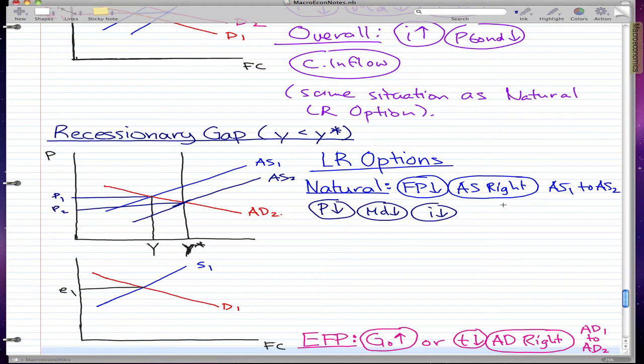So i falls, and when i falls we know that the price of bonds go up. Price of bonds go up means that we want the foreign bond, so there's a capital outflow. When there's a capital outflow that means we need the foreign currency, so there's currency depreciation.